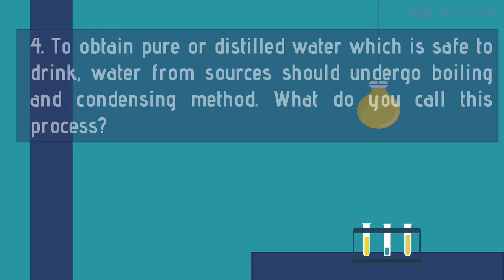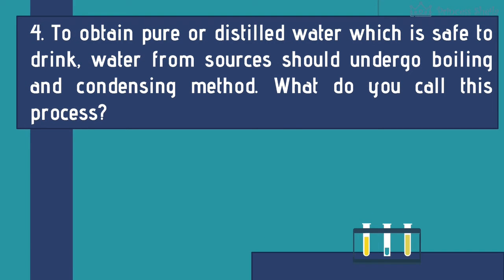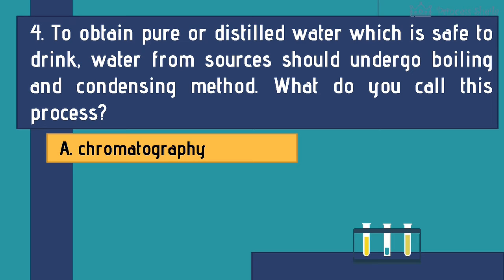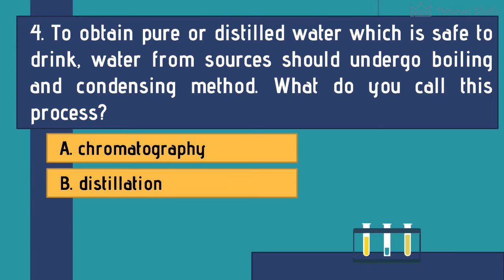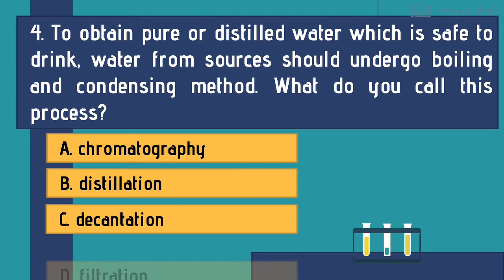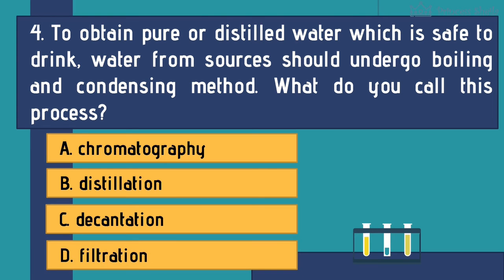Number 4: To obtain pure or distilled water, which is safe to drink, water from sources should undergo boiling and condensing method. What do you call this process? A. Chromatography. B. Distillation. C. Decantation. D. Filtration.